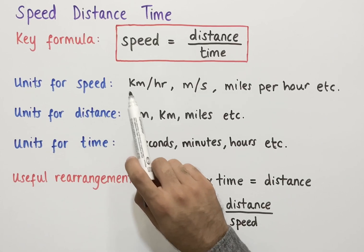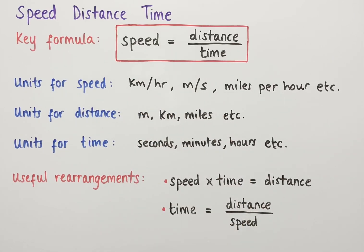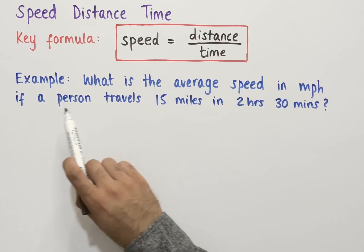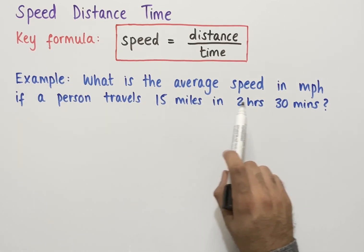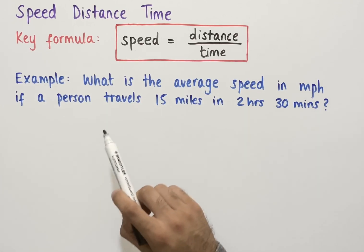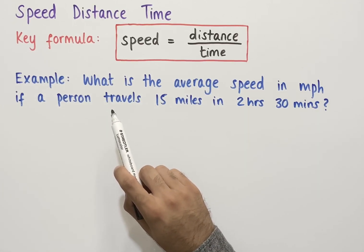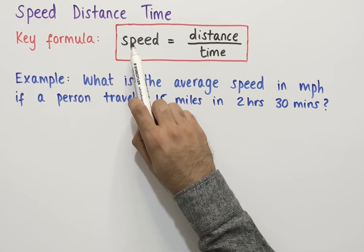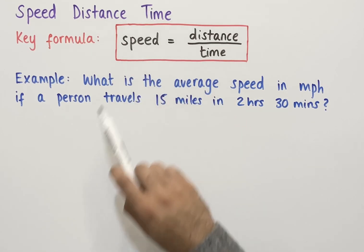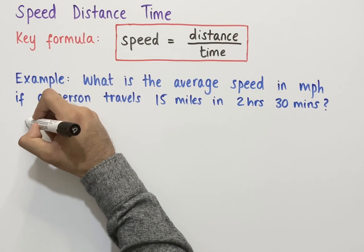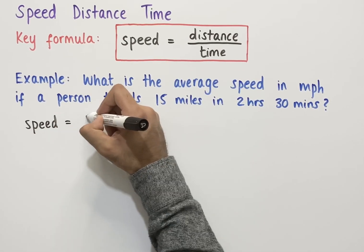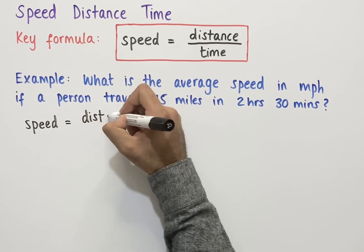Let's look at some examples of where we use this formula to work out either speed, distance, or time. The first example says: what is the average speed in miles per hour if a person travels 15 miles in 2 hours 30 minutes? We first need to identify what we're trying to work out — we're trying to work out average speed, so we need the formula: speed equals distance divided by time.